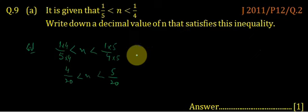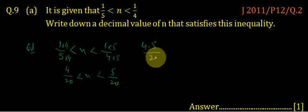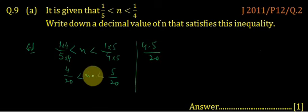We have to write n somewhere in between the two numbers because n is greater than this and less than this. We can take 4.5 divided by 20 as the value within the range.